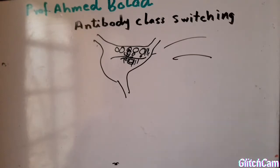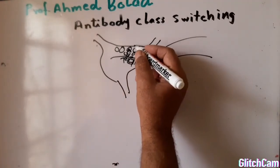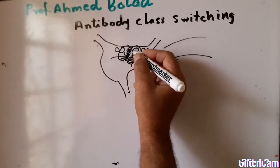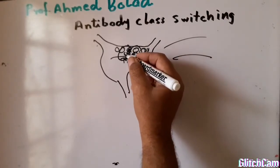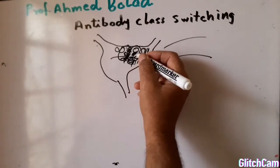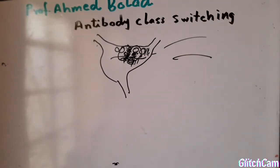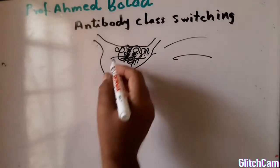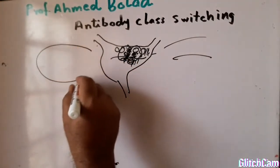These B lymphocytes arrange themselves into B cell follicles. When they get activated due to interaction with T cells, they form what is called the germinal center.